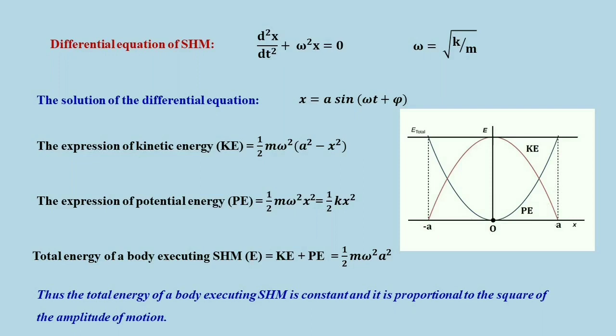The expression for kinetic energy is ½mω²(a² minus x²). For detailed calculation, you may see the video on simple harmonic motion already uploaded. The kinetic energy at any arbitrary position x is ½mω²(a² minus x²), where a is the amplitude. The kinetic energy is maximum at x equals 0. The graph marked in red shows the kinetic energy plotted with respect to position x.